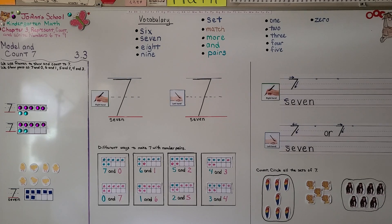So we can model and count 7 using a 10 frame and making number pairs with counters. We can show 7 as a 7 and 0, a 6 and a 1, a 5 and a 2, or a 4 and a 3.